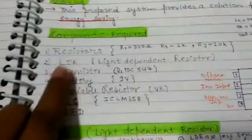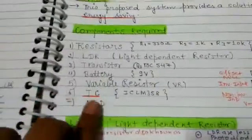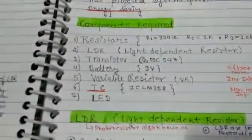Component requirements are: resistors, LDR, transistor, battery, variable resistor, IC, and LED. And I want to explain what is LDR and how it looks like.